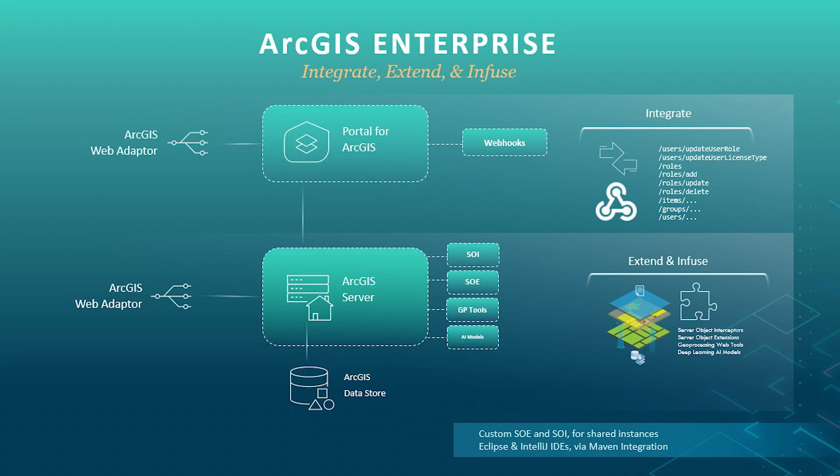You can trigger external events and business processes that are callable via URLs, creating event-driven automations. Events can be triggered based on various items, groups, or user changes. Event payloads are delivered as JSON over HTTPS.